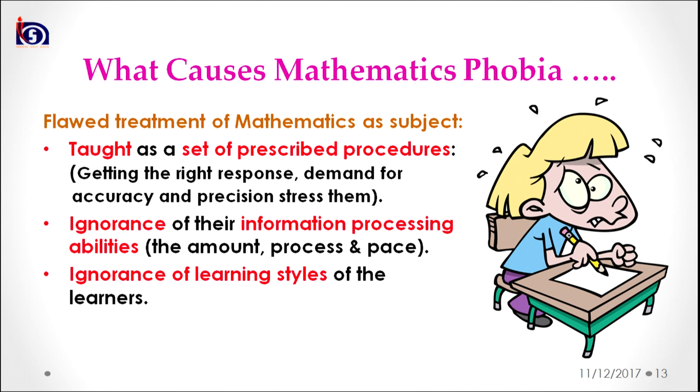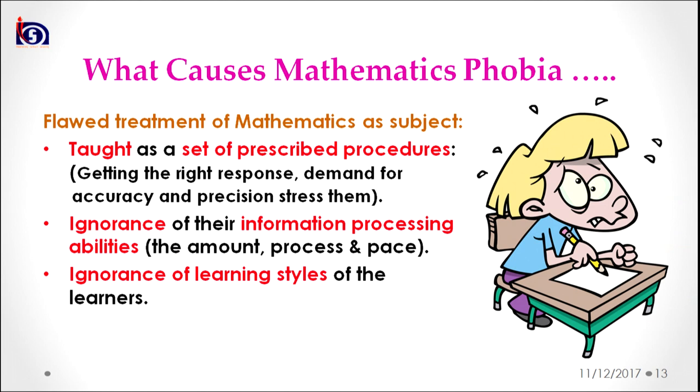The ignorance of learners' information processing abilities also makes mathematics a phobic subject. When we teach mathematics in school, we forget about the amount a learner can process cognitively, the processes they apply for information processing, and the pace at which they process information. We also always ignore the learning styles of different learners — some learn while seeing visuals, some by listening, and some only when learning is converted into actions. Forgetting to combine these learning styles makes mathematics fearful for students.